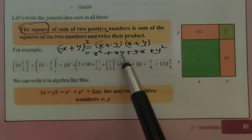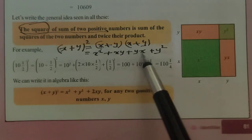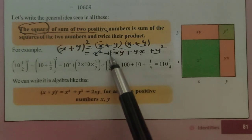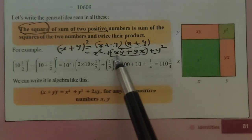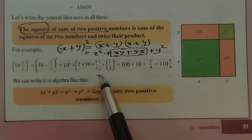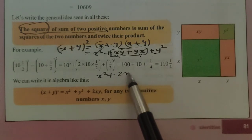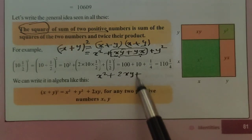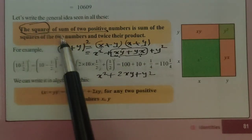What is the relation between XY and YX? X into Y is the same as Y into X, therefore we can combine these two. XY plus YX is like one XY plus one XY, which gives 2XY. Therefore this can be written as X square plus 2XY plus Y square.